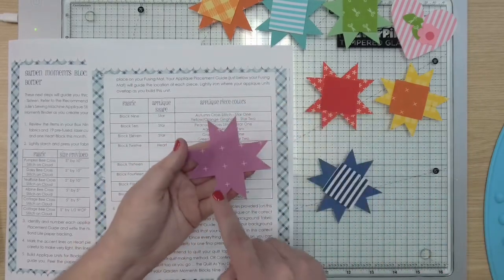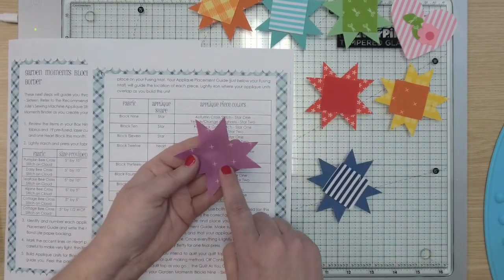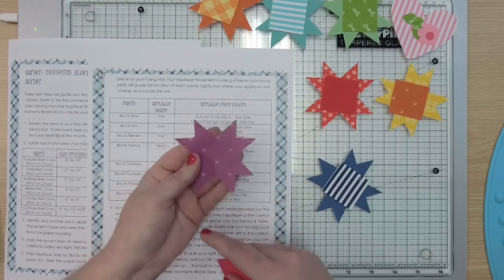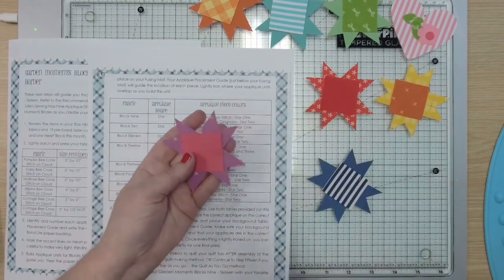And then a really fun one for block 16, you have the plum cross stitch and this design is called cross stitch. See the little X's everywhere? It's called cross stitch and then the raspberry center. So then when it comes to doing your applique these are really simple, nice straight lines on the stars, a few curves on the heart.